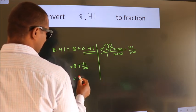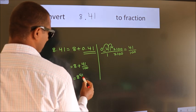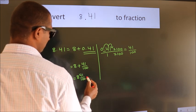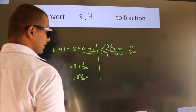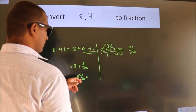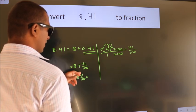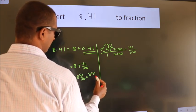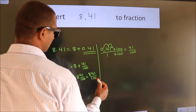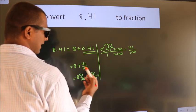In mixed fraction, it is 8 and 41 over 100. And in improper fraction, it is 8 times 100, which is 800, plus 41, giving 841 by 100 as our fraction.